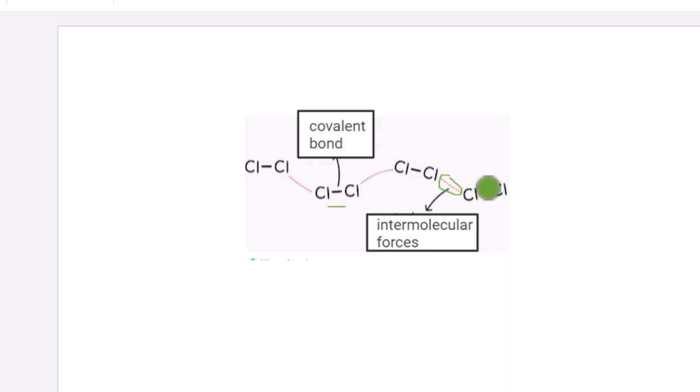So that's why covalent compounds have low melting and boiling points as compared to ionic compounds, where you have to break the ionic bonds to melt a compound.